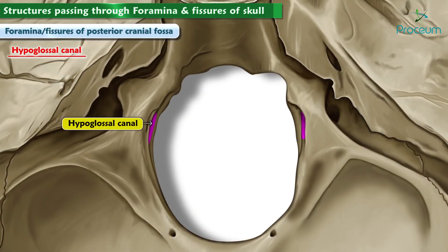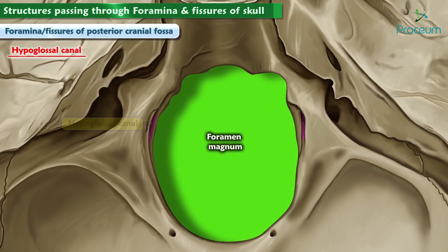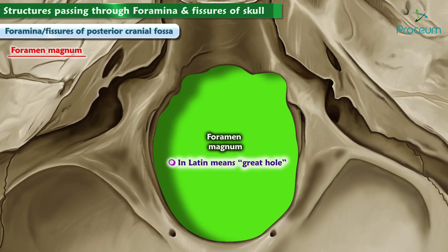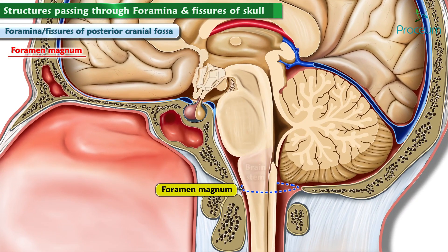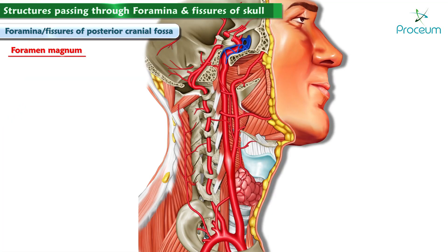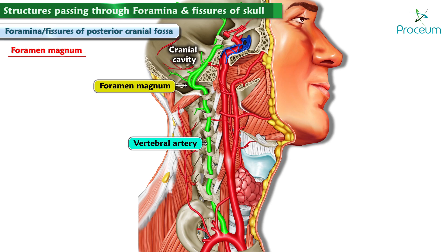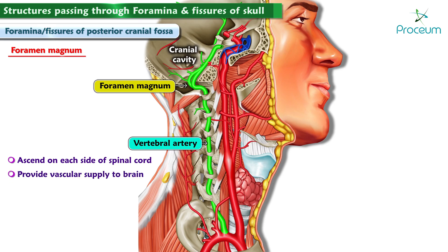The hypoglossal canal lies quite near the foramen magnum and allows passage of the twelfth cranial nerve, the hypoglossal nerve. The foramen magnum — Latin for 'great hole' — is the largest foramen and allows the lower end of the brainstem and upper end of the spinal cord to pass through. It also allows the vertebral arteries to enter the cranial cavity; these arteries ascend on each side of the spinal column to provide important vascular supply to the brain.